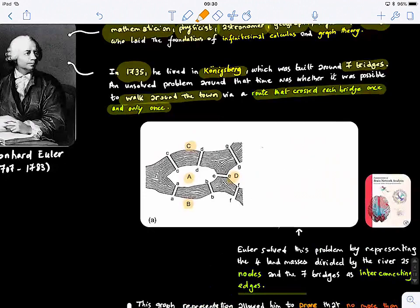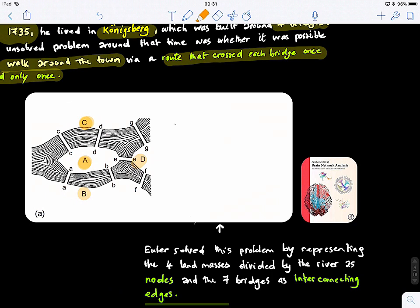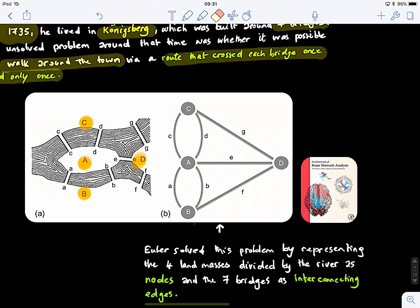To solve this problem, he thought about modeling these cities as nodes, and the bridges that connect them, that takes you from one to the next one, the neighboring one, as edges. This was the idea, how basically the idea of a graph was introduced. Let's look at this.